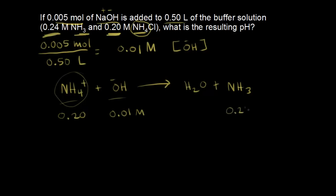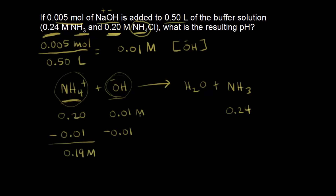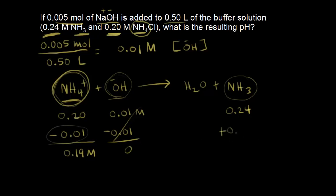If we have a concentration of hydroxide ions of 0.01 M, all of that is going to react with the ammonium. We're going to lose all of the hydroxide concentration, and that's going to neutralize the same amount of ammonium. So we're left with 0.19 M for our final concentration of ammonium. Hydroxide goes to 0 after it all reacts. And since ammonium turns into ammonia, we gain plus 0.01, giving us a final ammonia concentration of 0.25 M.